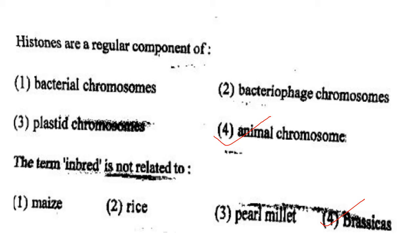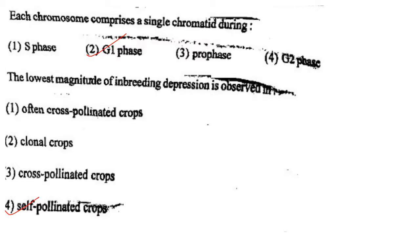Next one: The term inbred is not related to option 1, maize; option 2, rice; option 3, pearl millet; option 4, brassicas. Answer is option 4: brassicas.